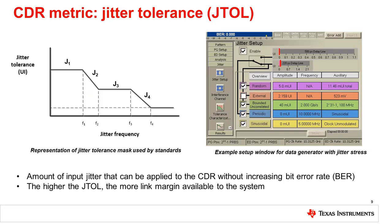Jitter tolerance limits are most often prescribed via networking industry standards such as Ethernet and PCI Express. A jitter tolerance test involves applying some form of periodic jitter to the CDR under test and then evaluating its bit error rate performance. Jitter tolerance is often specified as a mask requirement as a function of frequency in terms of UI, or unit interval. The jitter tolerance amplitude J1, J2, etc., required for the CDR will depend on the jitter frequency F1, F2, etc. Systems will also require that the CDR tolerate additional forms of jitter. The higher the CDR JTOL, the more margin available to the system for meeting specification limits and achieving a zero bit error rate.